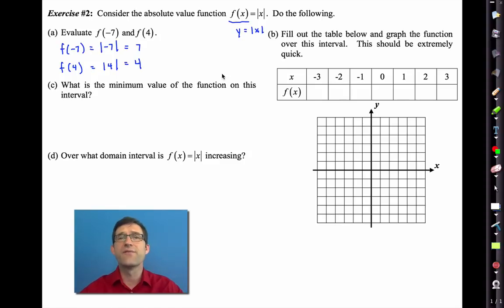Letter b asks us to fill out the table below and graph the function over this interval. This should be extremely quick and the reason why is that literally in each case the output is the absolute value of the input. So for instance the absolute value of negative 3 is 3. That of course gives us the point negative 3, 3 which is right here.